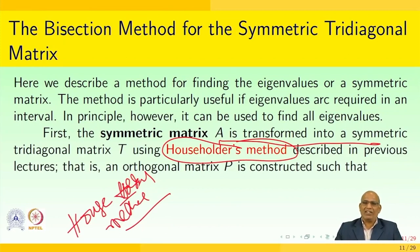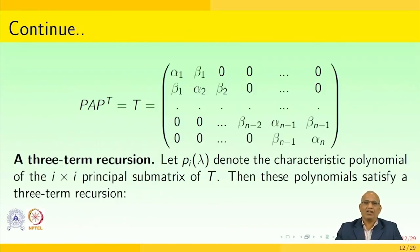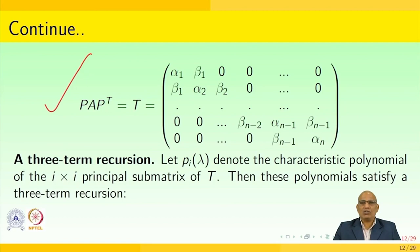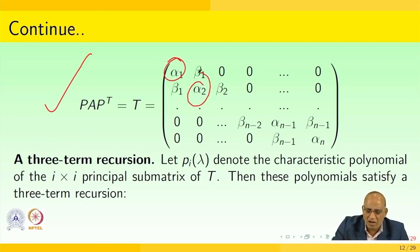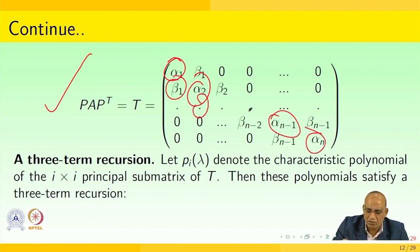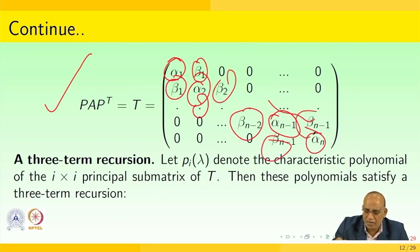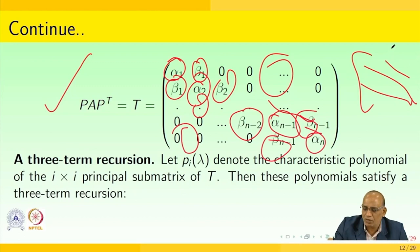As described in the previous lecture, an orthogonal matrix P is constructed such that P transpose A P equals T. So essentially you transform the matrix into symmetric tri-diagonal form T, which has the elements alpha 1, alpha 2, ..., alpha n on the main diagonal, and beta 1, beta 2, ..., beta n minus 1 on the sub-diagonal and super-diagonal, with rest all zeros.